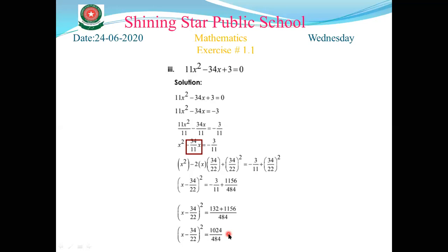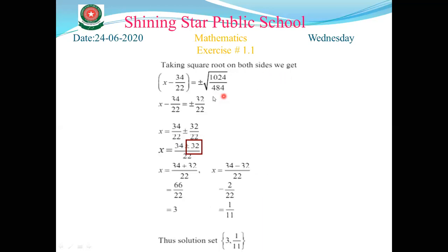The fifth step is taking the square root on both sides. When we take the square root, the left side cancels and the right side gets a square root. √1024 = 32 and √484 = 22. The sixth step is to take the constant from the left side to the right side.